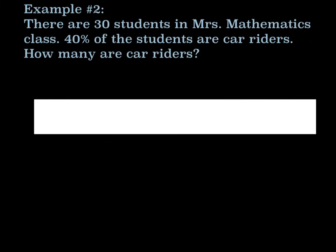Let's take a look at example number two. There are 30 students in this mathematics class. 40% of the students are car riders. How many are car riders? So always start with putting in your 0% and 100%. So in this question, 100% of this mathematics class would be 30 students. And 0% of mathematics class would be 0. Next, we have to look at what the question is asking. It says 40% of the students are car riders. How many are car riders? So we're looking for 40%.